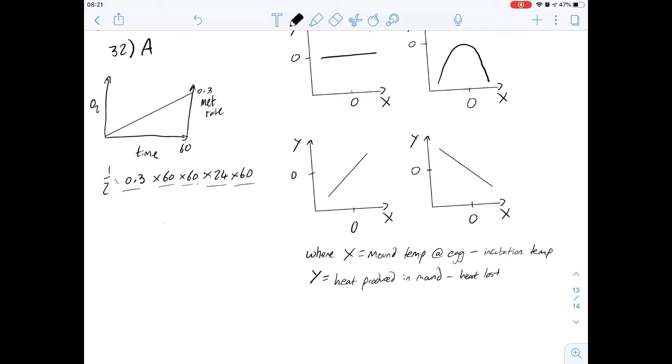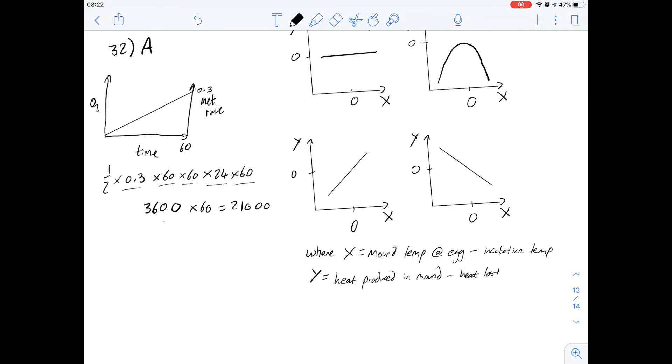And because it's the area of the triangle, we need to do a half times all of that, and then that will give us our answer. So it's worth maybe trying to approximate this at this point. So 60 times 60 you might already know it's going to be 3600.